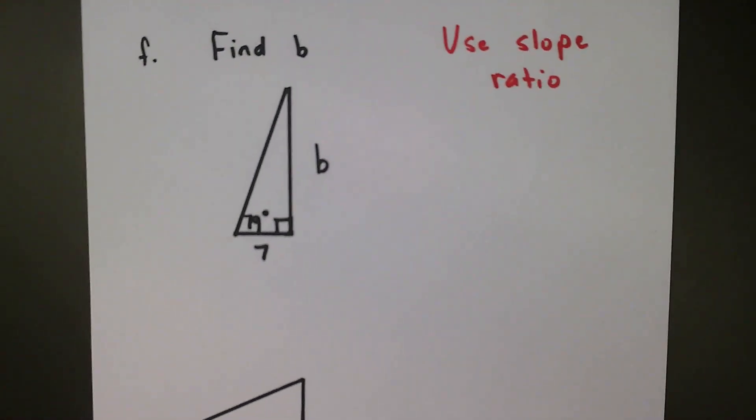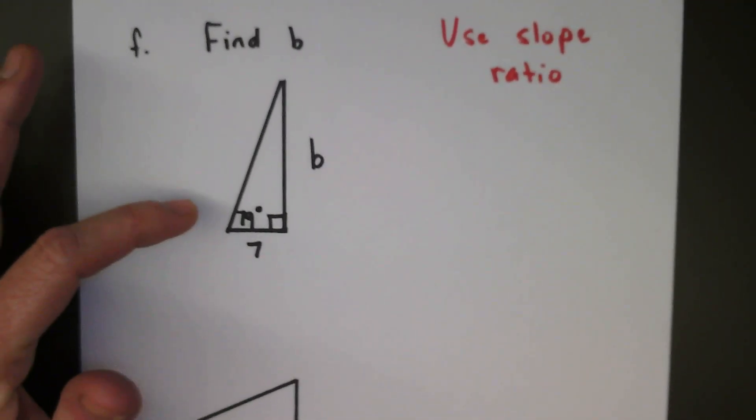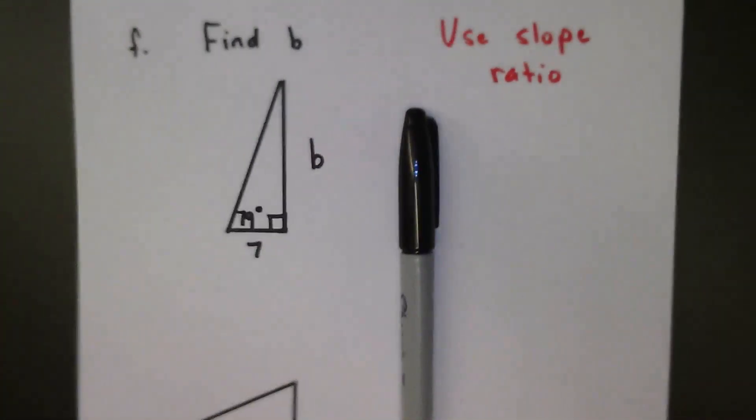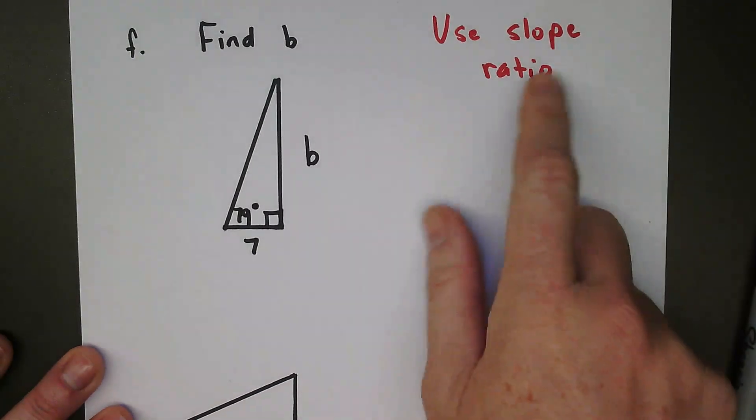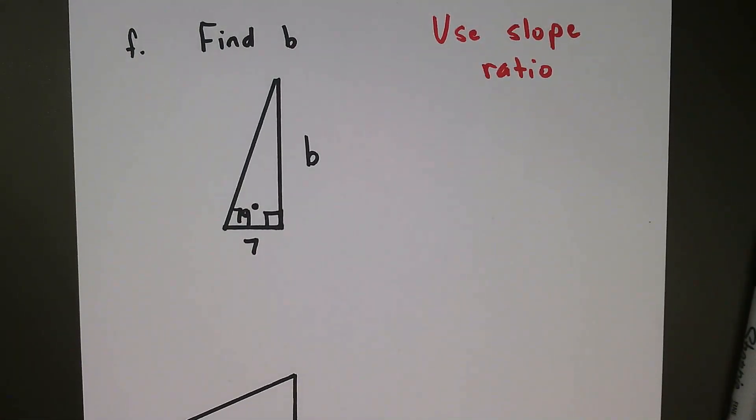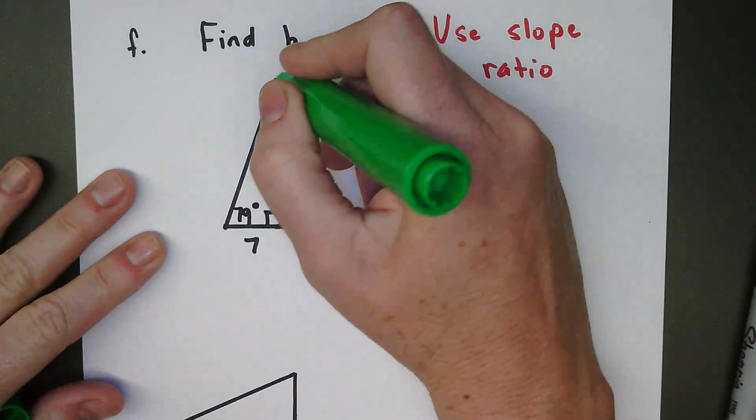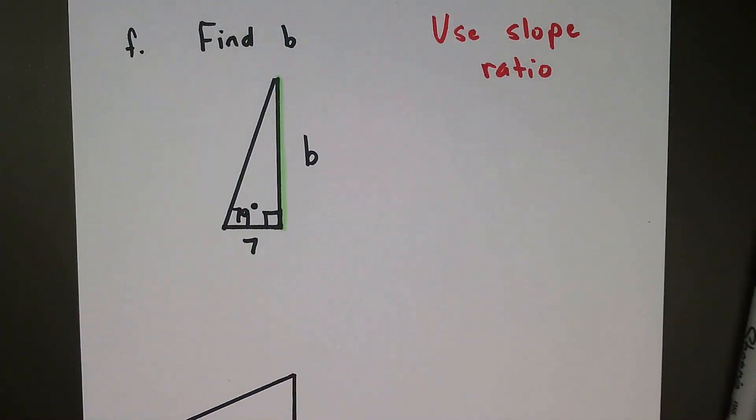Okay, here we go. We are looking at this right triangle here, and we're asked to find B. B is the longer leg in this picture, and we're told specifically to use the slope ratio. So we want to find this side, and we're going to use the slope ratio.